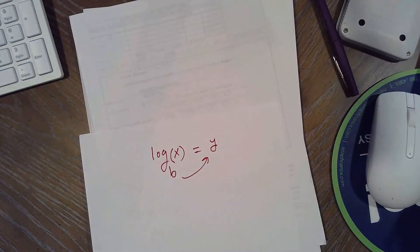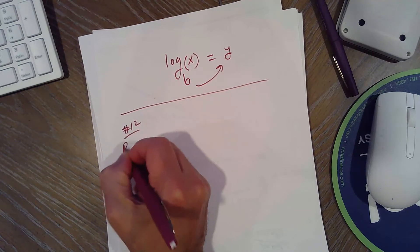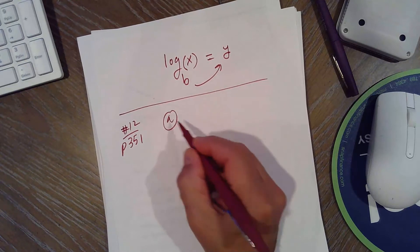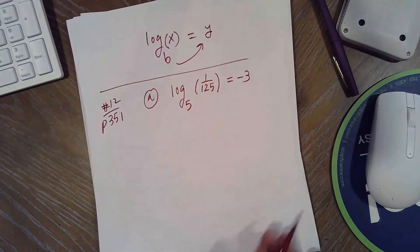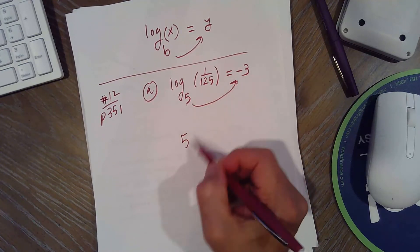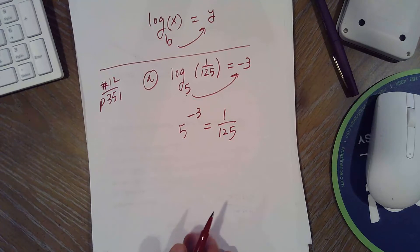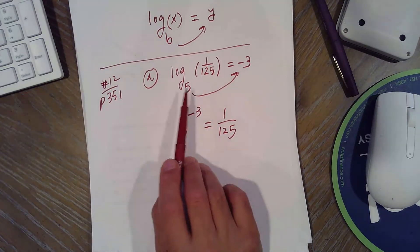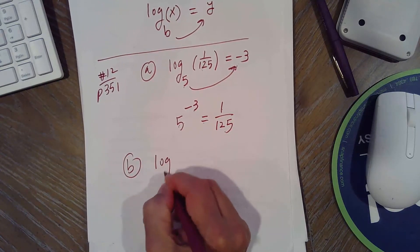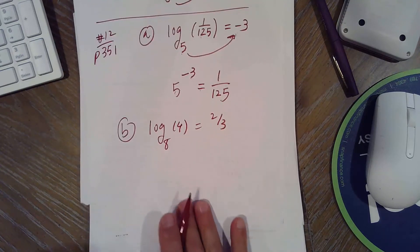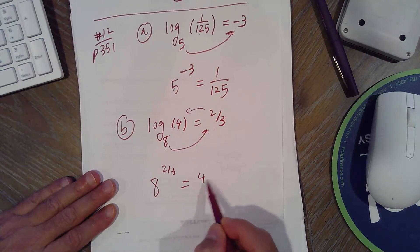Let's practice. Number 12, page 351. Part A: log base 5 of 1/125 equals negative 3. This is log form; we want exponential form. Start at the 5, go across the equal sign: 5 to the negative 3 equals 1/125. Drop the log. It's true that 5 to the negative 3 is 1/125. Part B: log base 8 of 4 equals 2/3. Start at the base: 8 to the 2/3 equals 4. That's the exponential form.